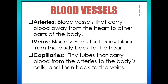For arteries: this type of blood vessel carries blood away from the heart to other parts of the body, and the blood they carry is oxygen-rich blood. For veins: this type carries blood from the body back to the heart, and the blood they carry is deoxygenated — lacking oxygen. For capillaries: these blood vessels carry blood from the arteries to the body cells and then back to the veins.